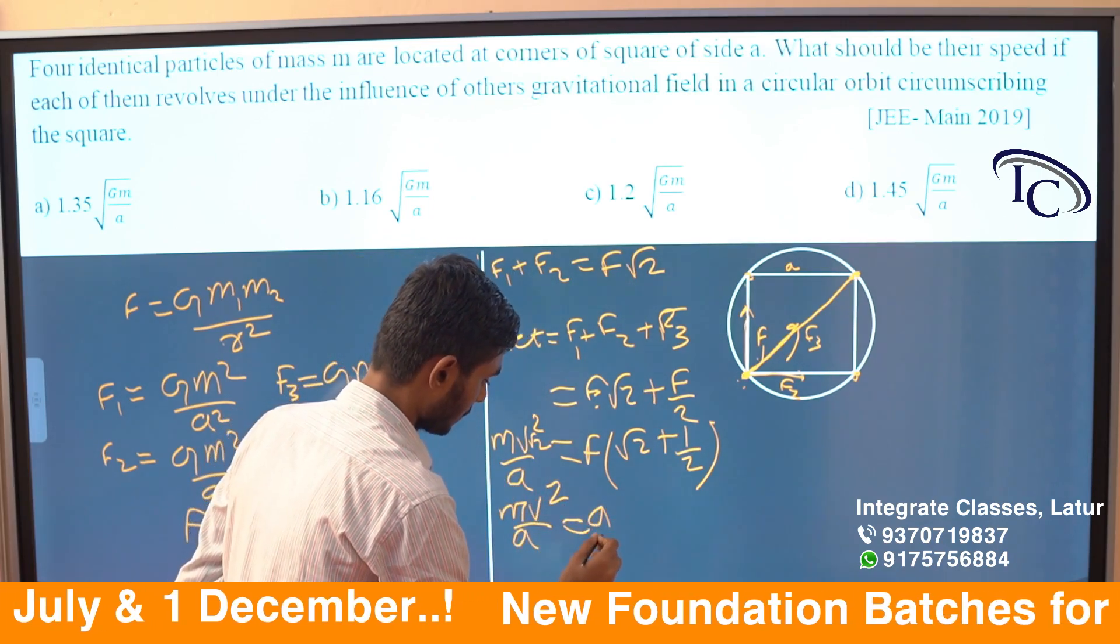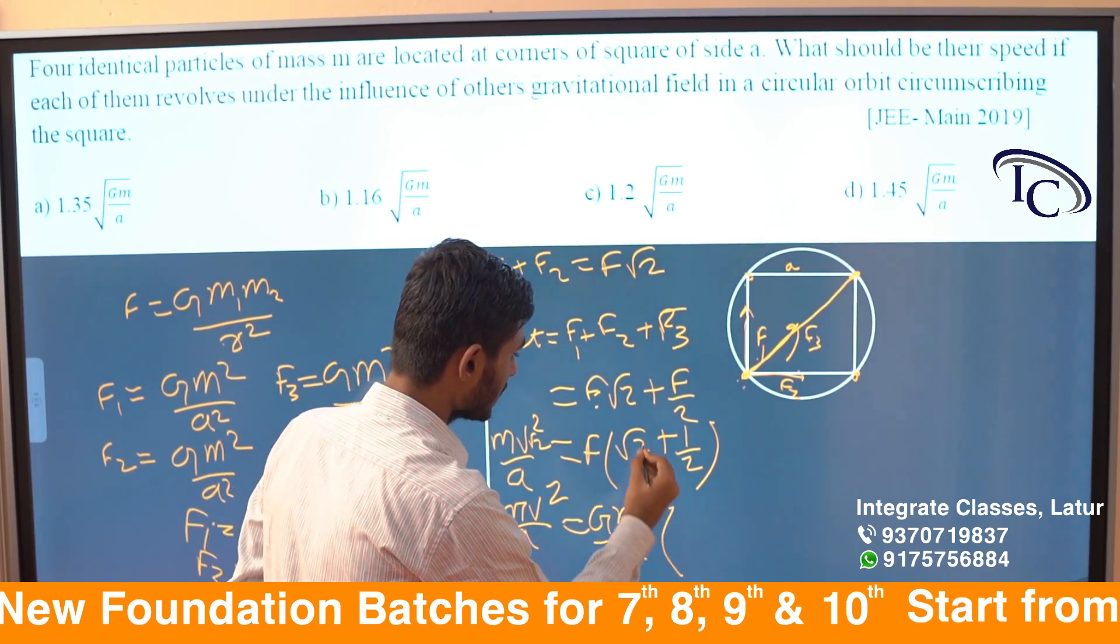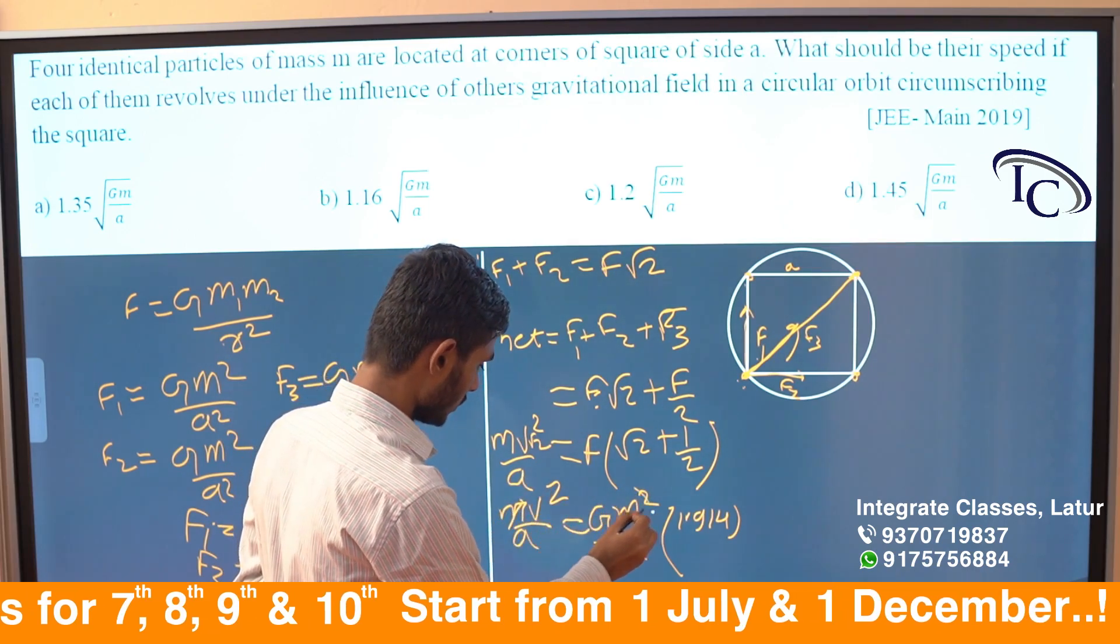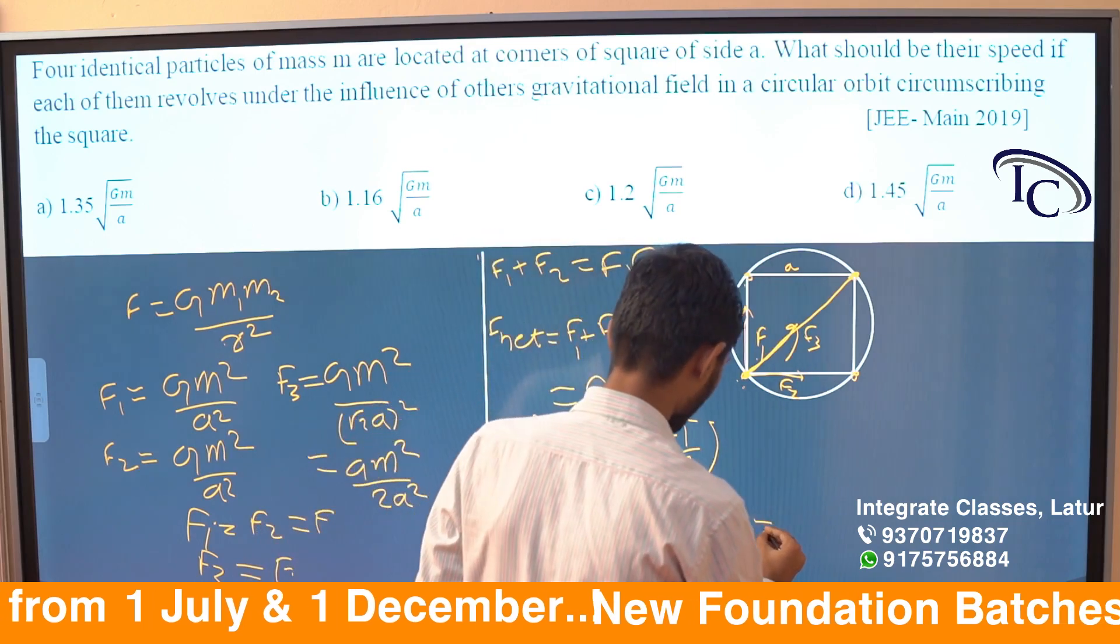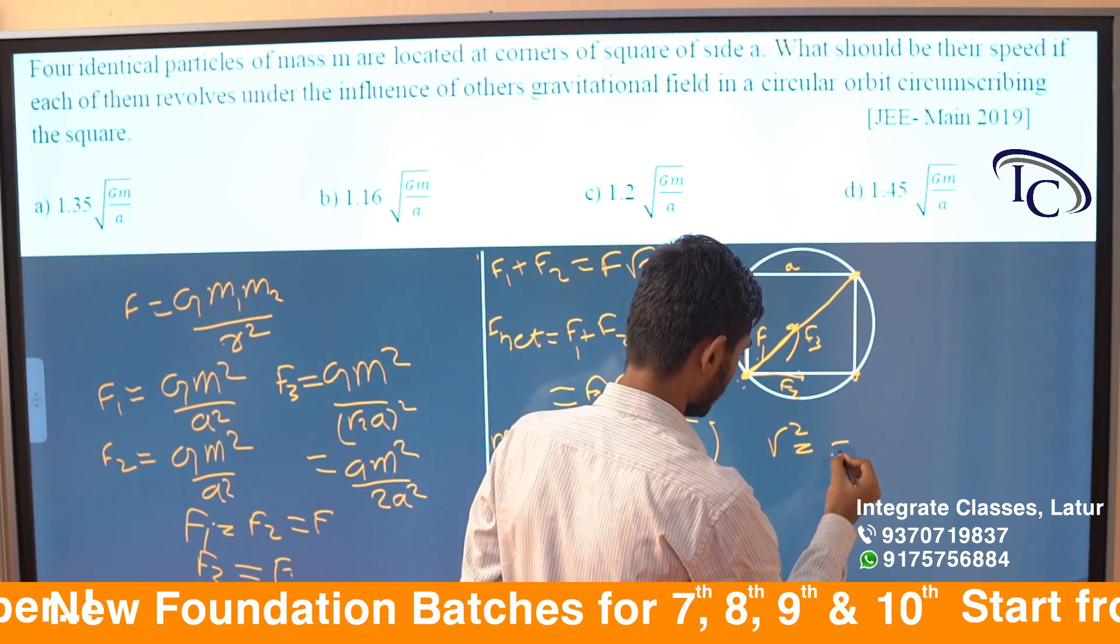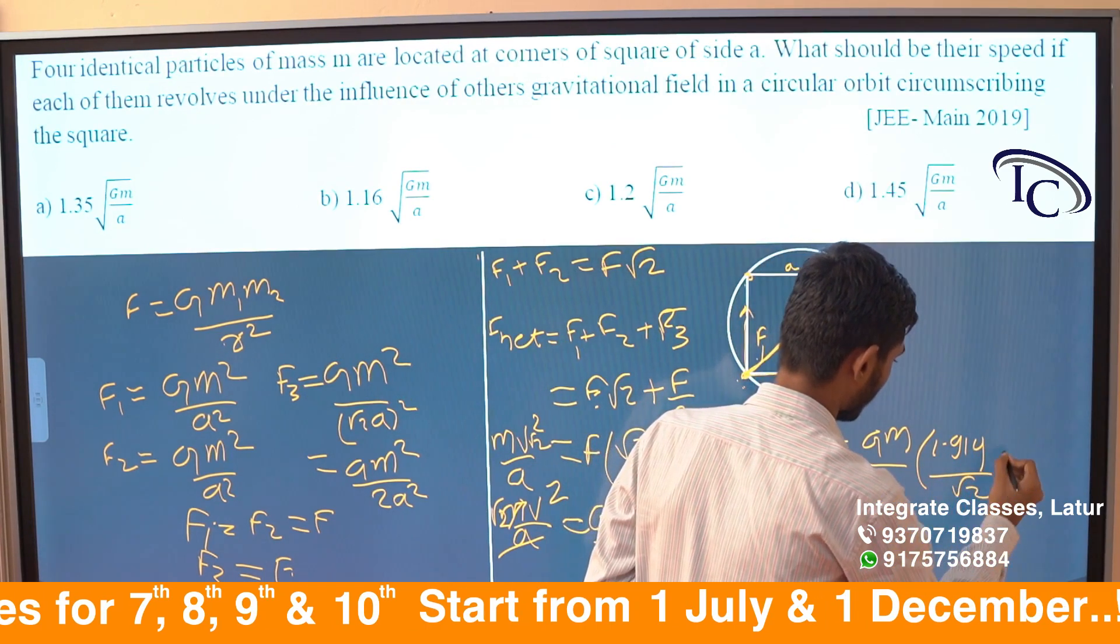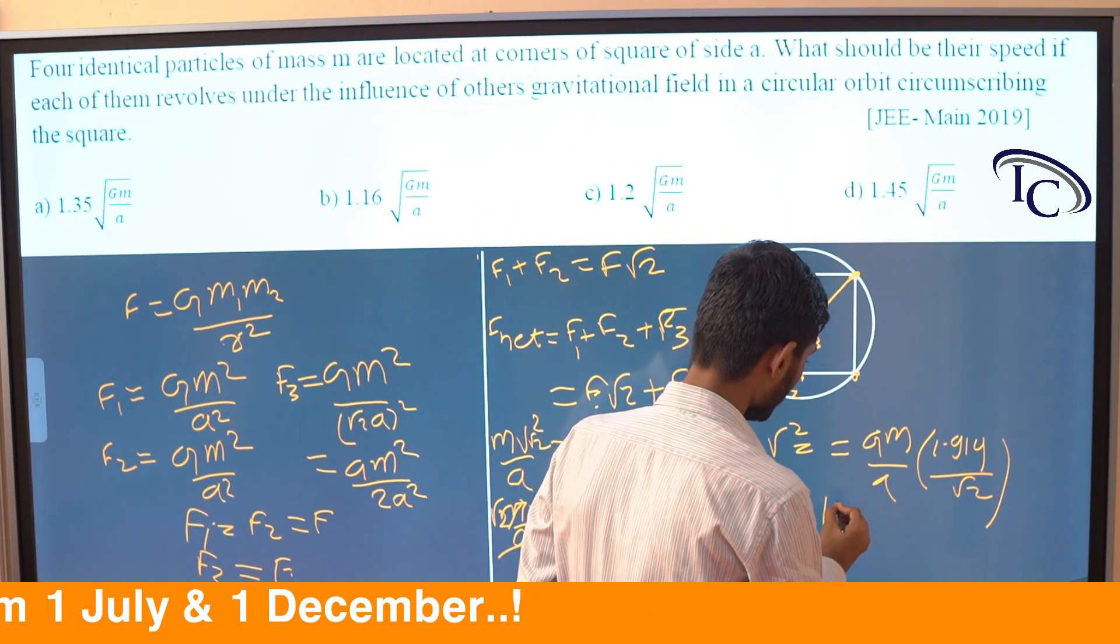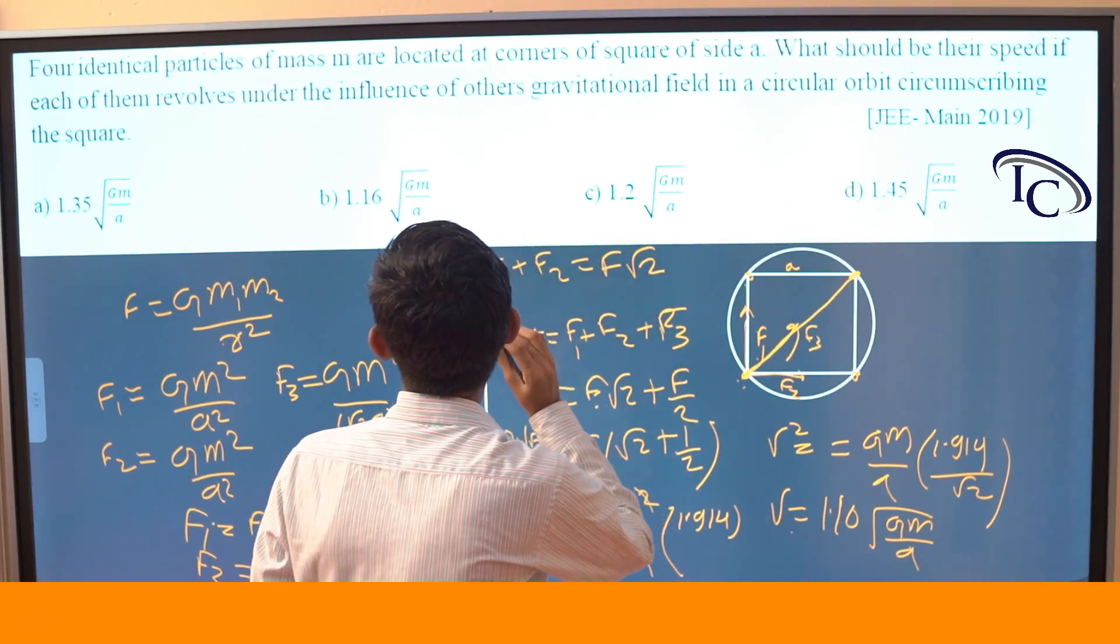The coefficient value is 1.914. So v² equals GM/a times 1.914 divided by 2. Taking the square root, we get approximately v equals 1.16 times the square root of GM/a. So option B is correct.